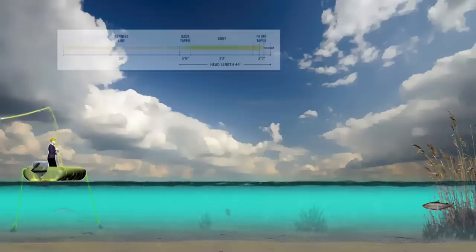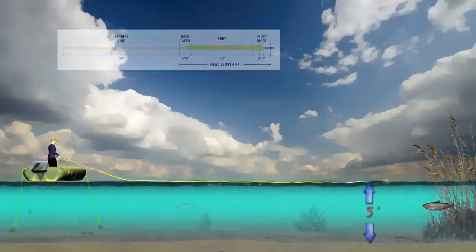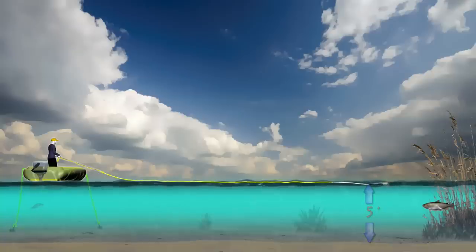The midge tip is a floating line married to a 39 inch section of clear intermediate line. The intermediate tip sinks slowly, making it an ideal choice for presenting flies in shallow water less than 10 feet in depth.